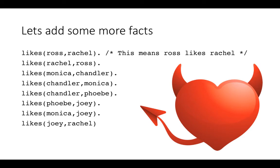Now this is very loosely remembered from the show so I hope I'm not giving you spoilers but Ross definitely liked Rachel and Rachel definitely liked Ross. Monica liked Chandler in the end and Chandler liked Monica. Chandler liked Phoebe and Phoebe liked Joey and Monica liked Joey as well and Joey liked Rachel. So those are some facts and we can interrogate those too.